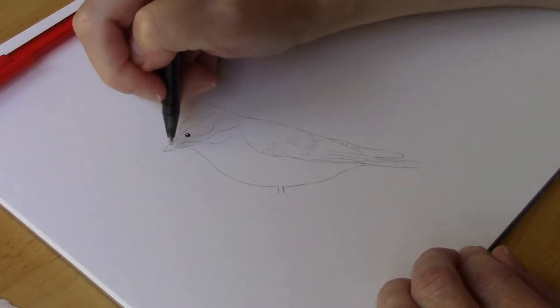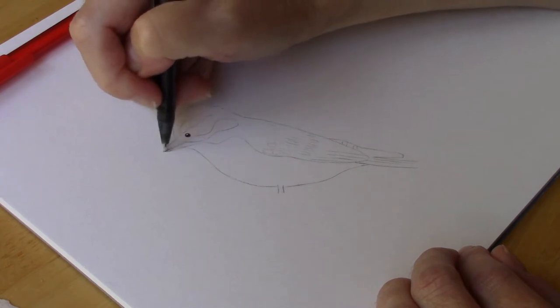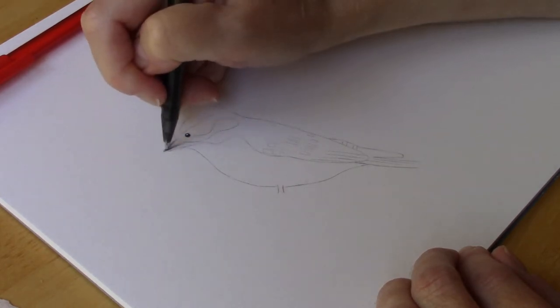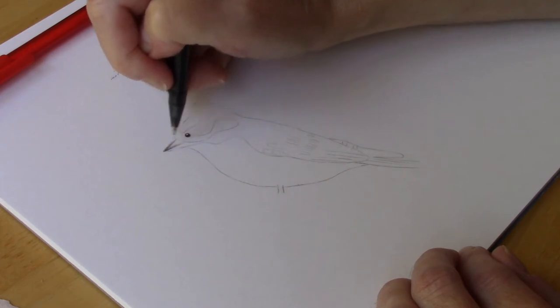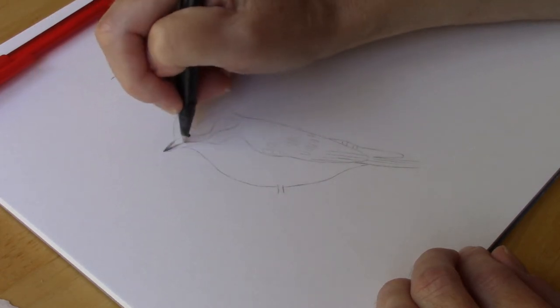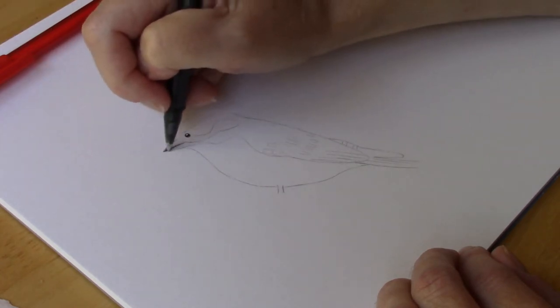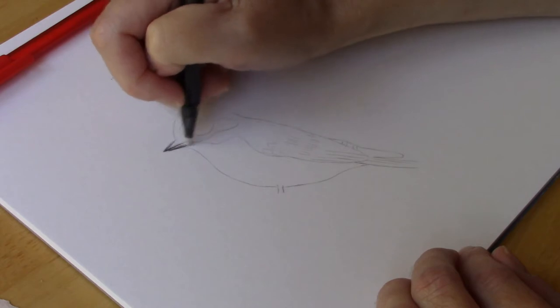I'm going to work on the beak and I'm going to start with very light pressure as I work on the beak because I don't want to go too dark too fast. I'm going to have the center line be a little bit darker and then underneath the bottom part of his beak, I'm going to have it be darker too.